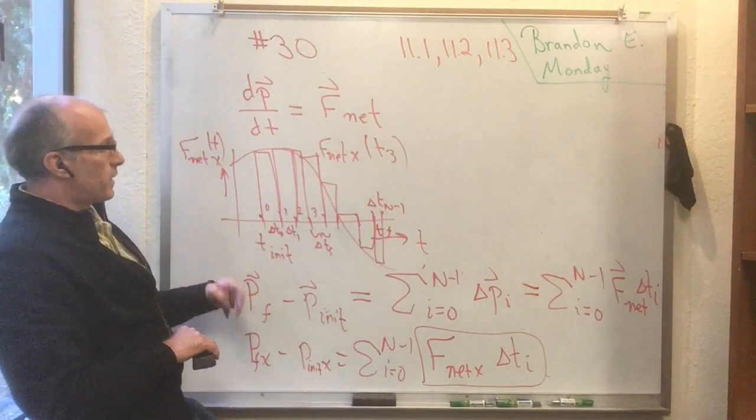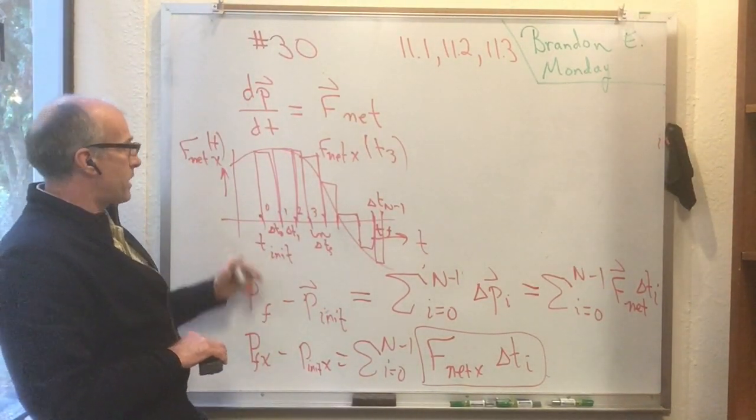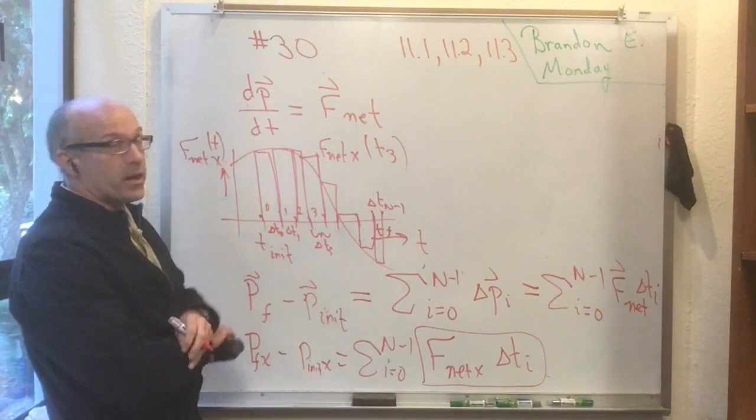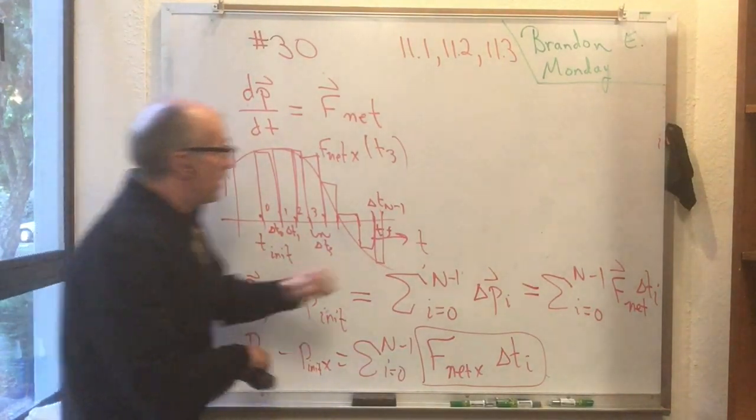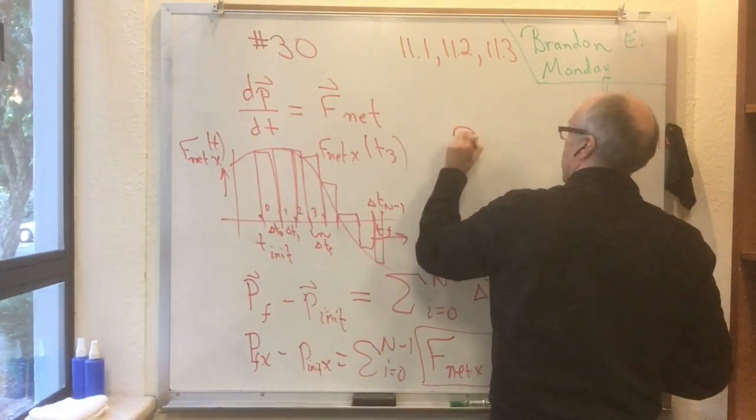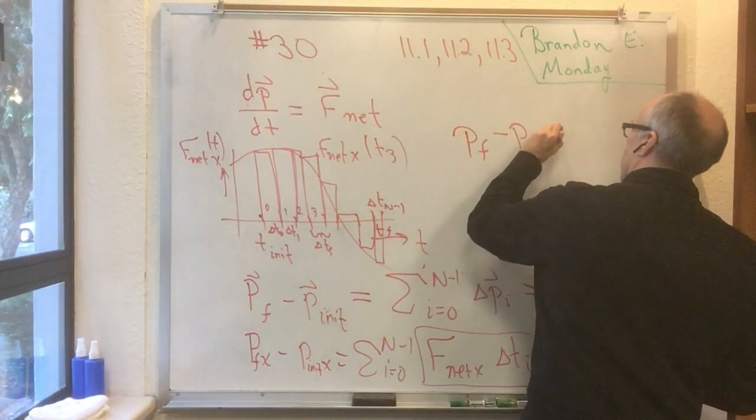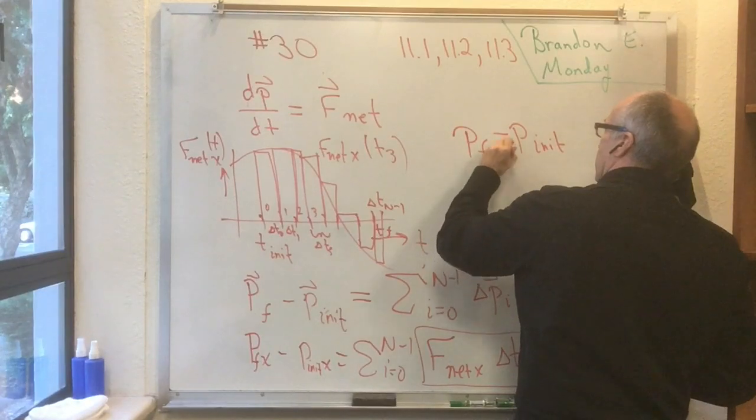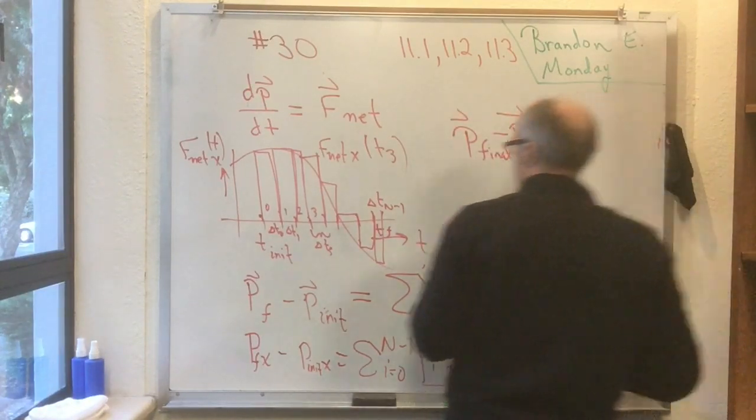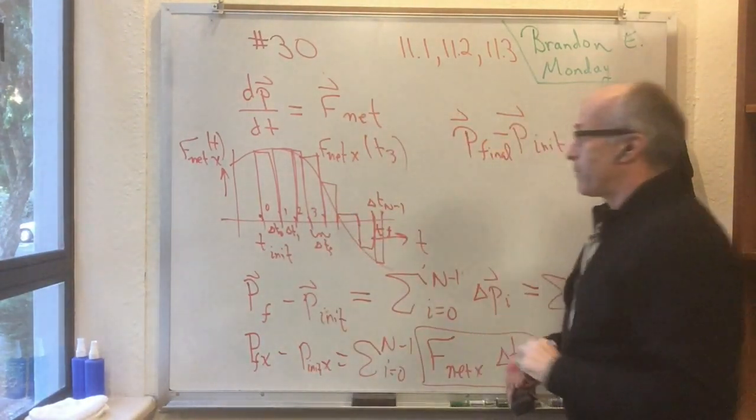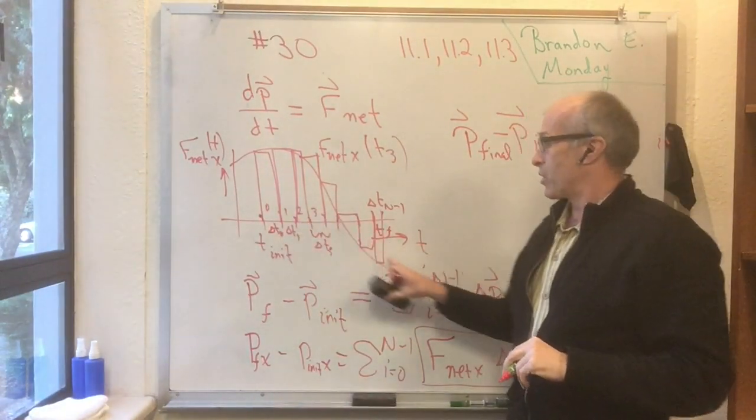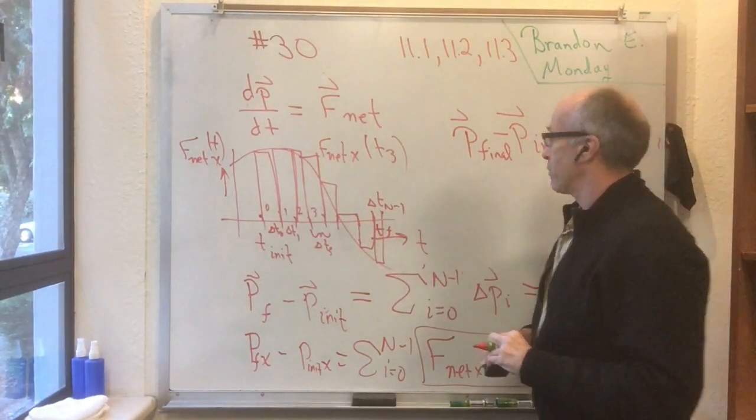And of course, we're going to take the limit that n goes to infinity so that we get a more and more accurate approximation to p_final minus p_initial.